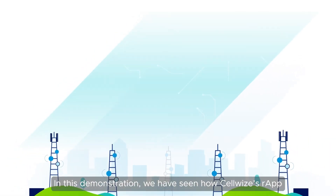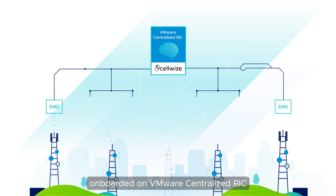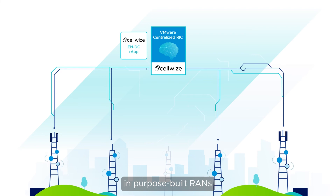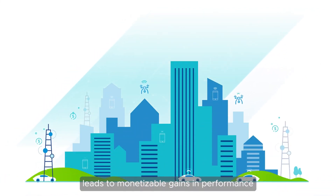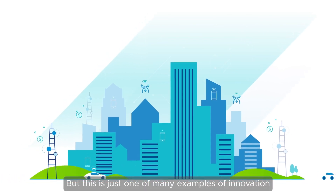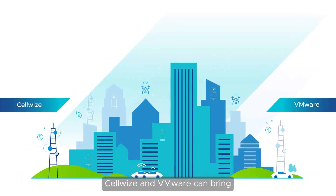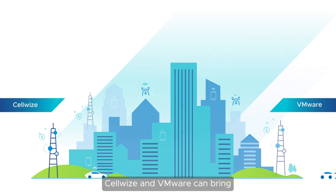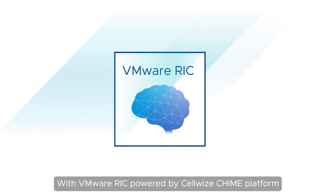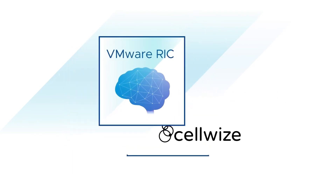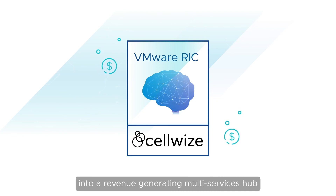In this demonstration, we have seen how CellWise's R-App, onboarded on VMware Centralized RIC, optimizes ENDC anchoring to maximize spectral usage in purpose-built RANs, and how this optimization leads to monetizable gains in performance. But this is just one of many examples of innovation that CellWise and VMware can bring to any type of RAN deployment through programmability. With VMware RIC powered by CellWise's QIIME platform, operators can now transform any RAN into a revenue-generating multi-services hub.